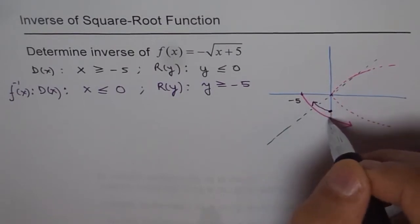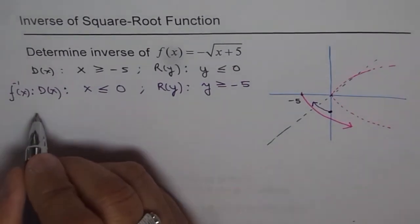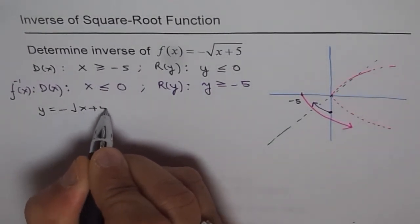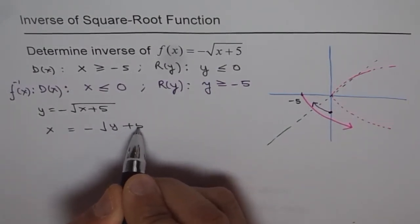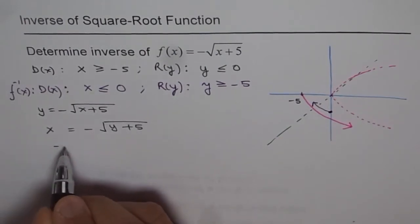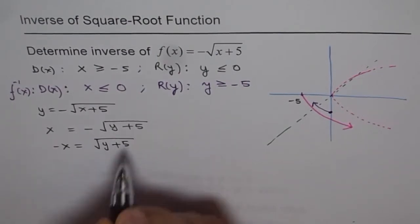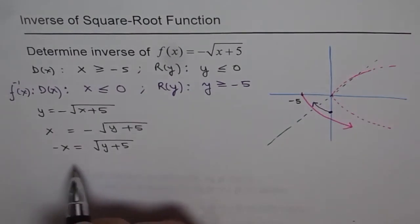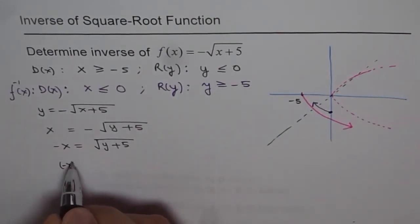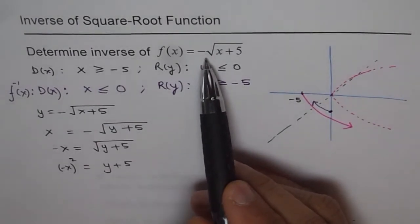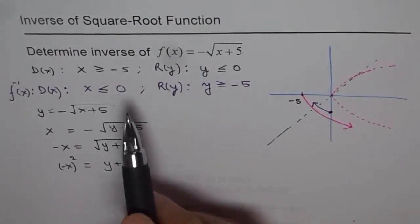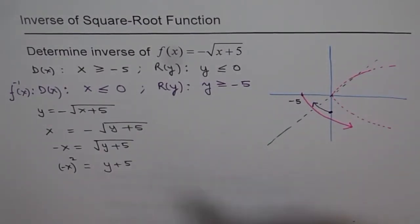Now with that in mind, let us work it out algebraically. We have y = -√(x + 5). To find the inverse, we swap x and y, giving x = -√(y + 5). Multiplying both sides by -1: -x = √(y + 5). Now we need to square both sides to remove the square root — but squaring both sides causes problems, because we are squaring a negative number. Whenever you do this you are incorporating an error, so you have to be very careful at this stage.